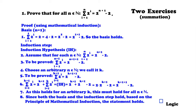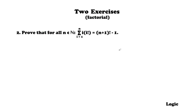Since this holds for an arbitrary k, it must hold for all n in the natural numbers. Since both the basis and the induction step hold, based on the principle of mathematical induction the statement holds. As you've noticed, the step-by-step guide requires eight steps but gives a clear overview of where you are in the proof and helps you understand what you're actually doing.